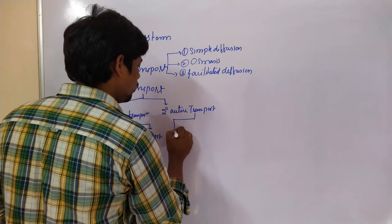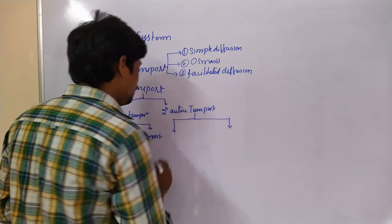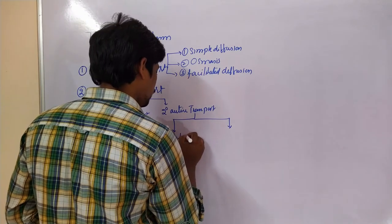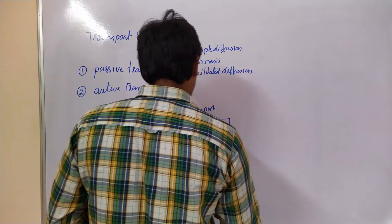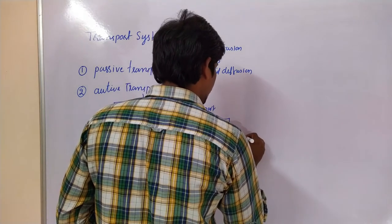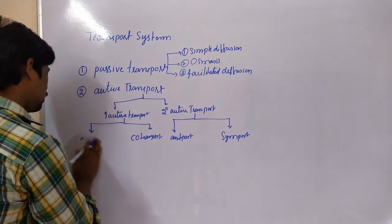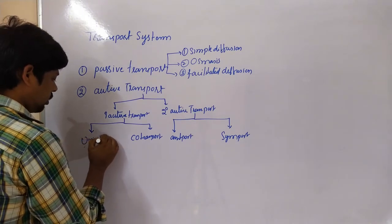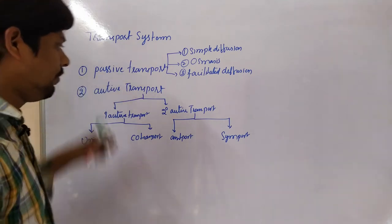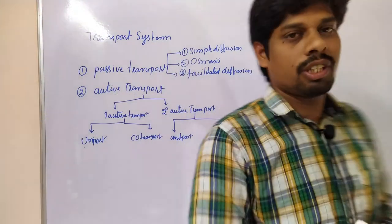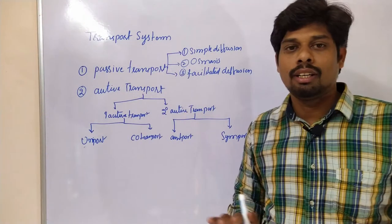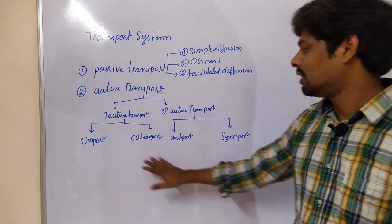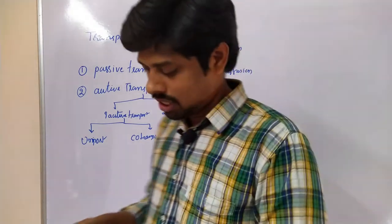Secondary active transport is also divided into two types — antiport and symport. In this way, there are different types of transport systems present across the plasma membrane. This is the concept we are going to observe. Let us start with the diagrammatical explanation.